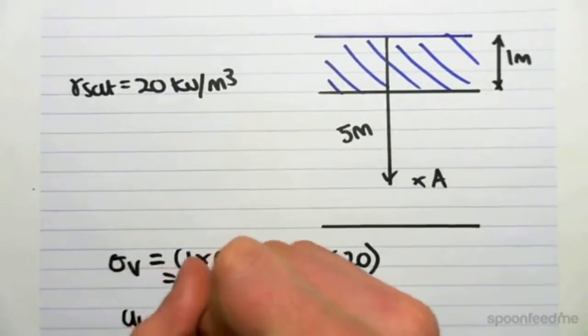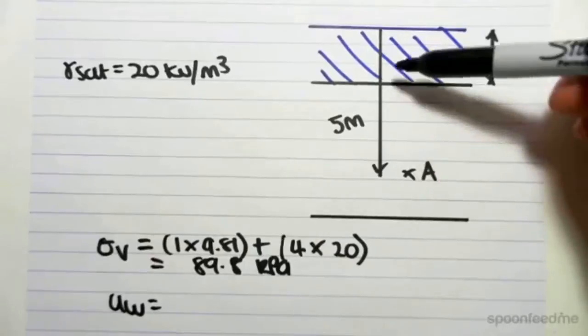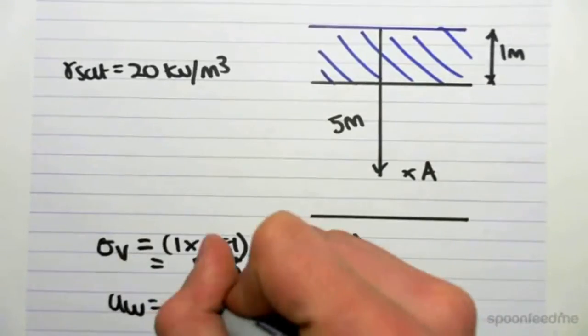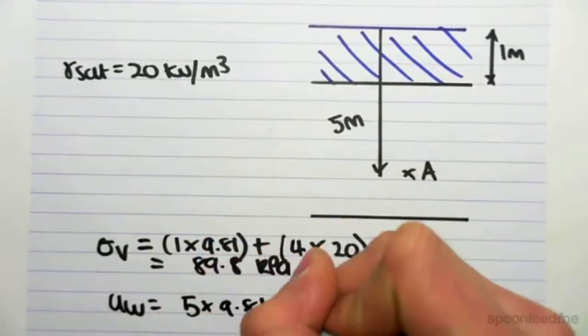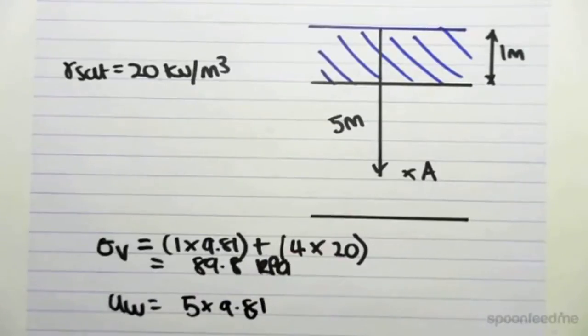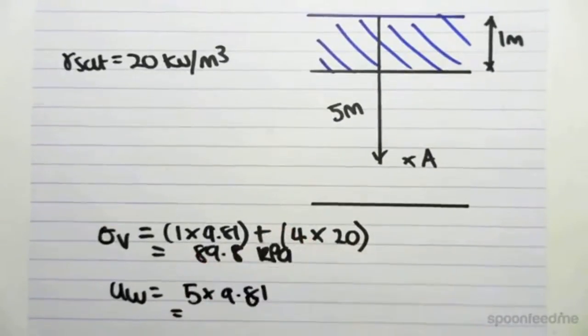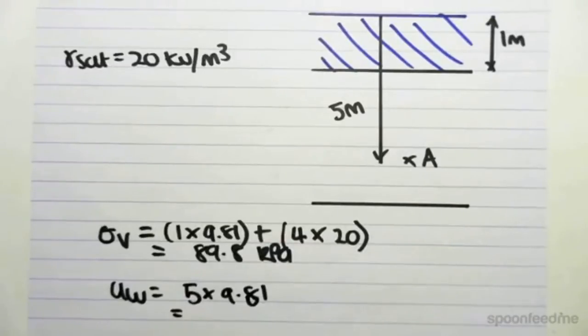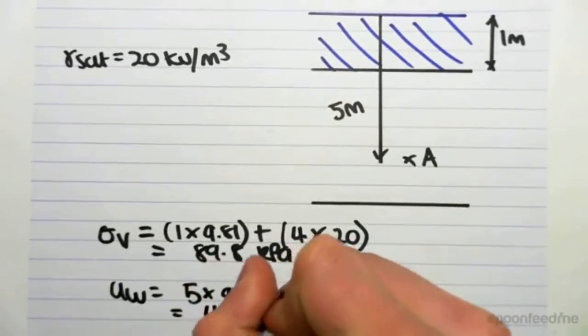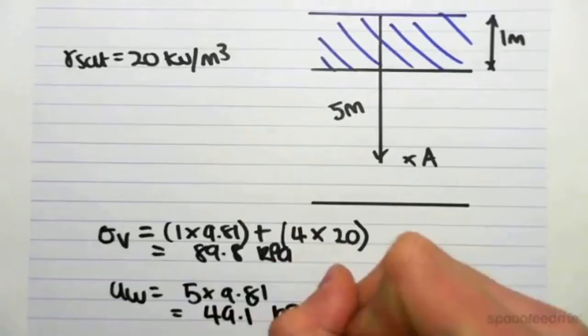Now, the pore water pressure is actually the full depth, right? So it's going to be 5 meters of 9.81. It's 5 times gamma w, so 5 times 9.81. So we get 5 by 9.81, 49.1 kPa,